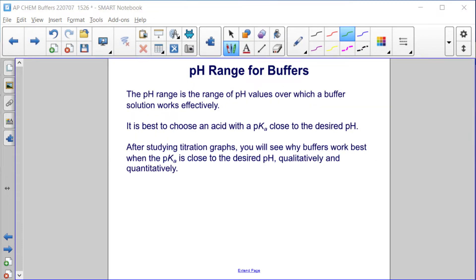pH range for buffers. The pH range is the range of pH values over which a buffer solution works effectively. It is best to choose an acid with a pKa close to the desired pH. After studying titration graphs, which is in the next unit, you will see why buffers work best when the pKa is close to the desired pH, qualitatively and quantitatively.